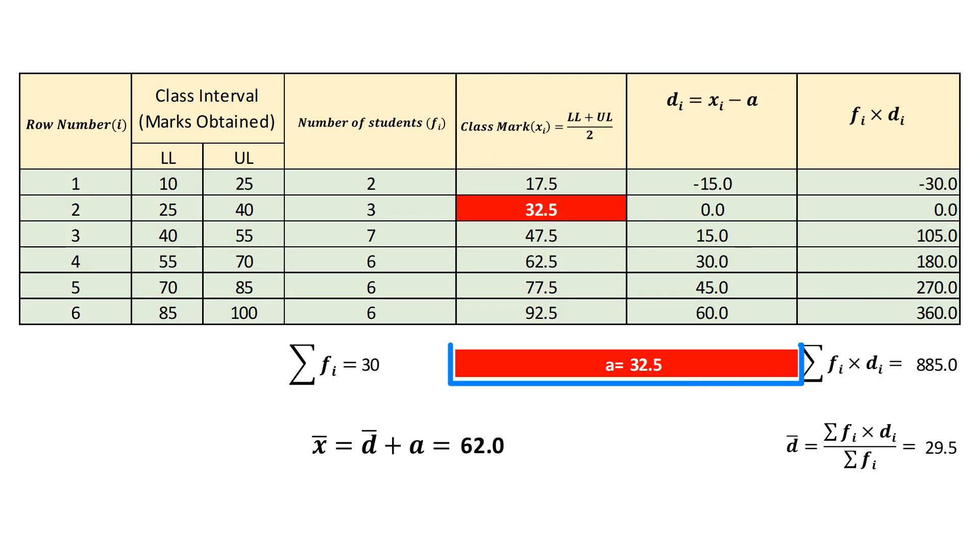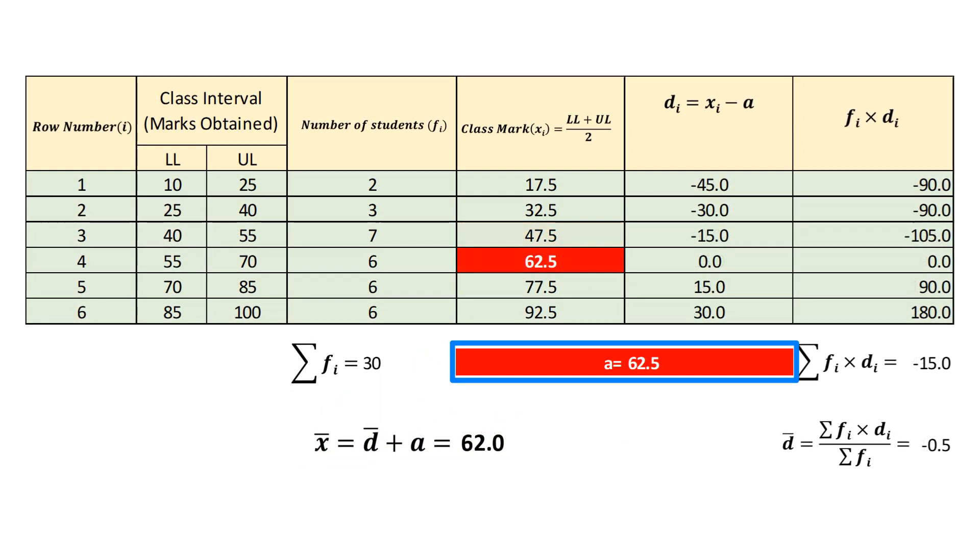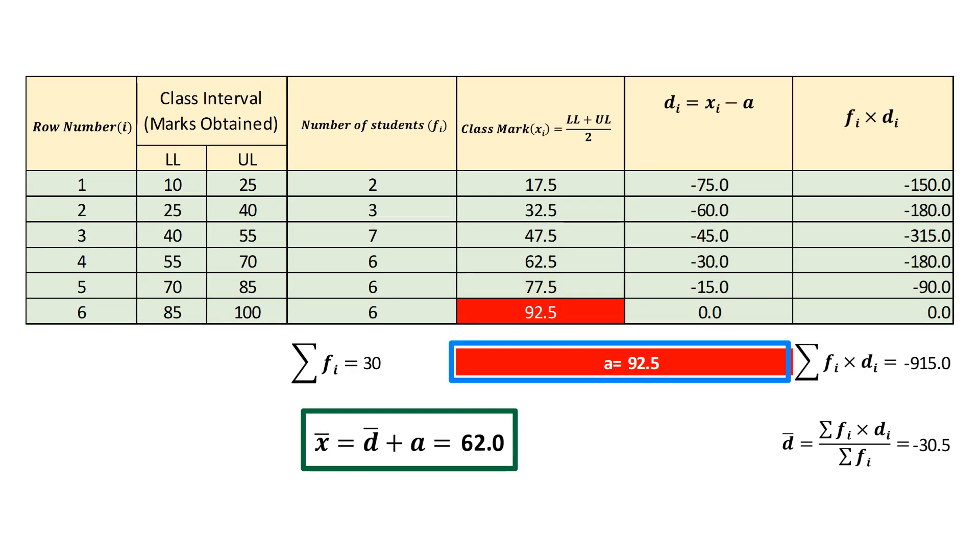If assumed mean a equals 32.5, by using same algorithm, we can find mean of the data which is 62 again. If assumed mean a equals 47.5, we get the same value of mean. If assumed mean a equals 62.5, no change. If assumed mean a equals 77.5, no change. If assumed mean a equals 92.5, still no change.